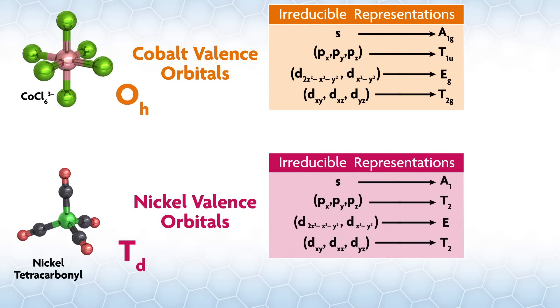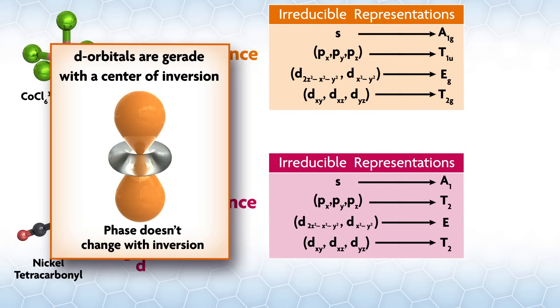This was because Oh and Td are both cubic groups. We make them from inscriptions of a cube. The d orbitals are gerade with a center of inversion, and when we went to Oh, which has an inversion center, the irreducible reps took account of this.